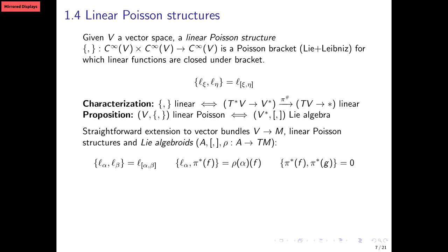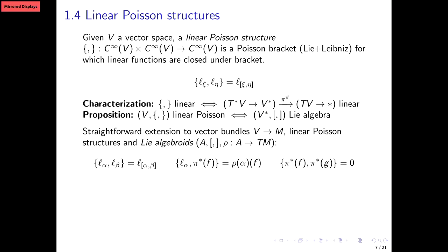Now we have three formulas instead of one, because besides the fiber-wise linear functions, we should also keep track of basic functions. The idea is that two basic functions should Poisson-commute; the bracket between a linear and a basic function is linear; and the bracket of two linear functions is also linear. I find it very interesting that you have a perfect duality that will express itself in several instances in the next portion of the talk.